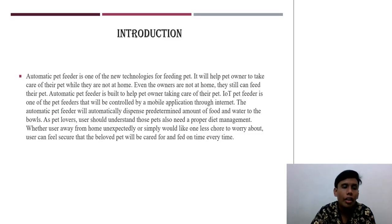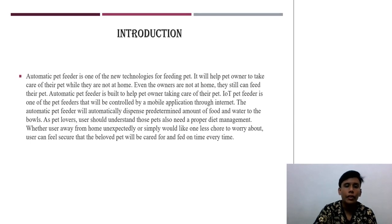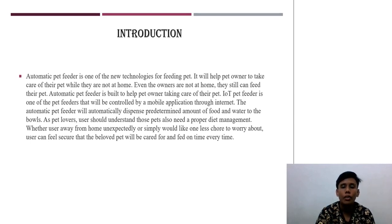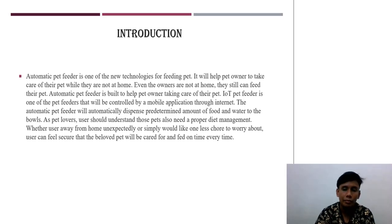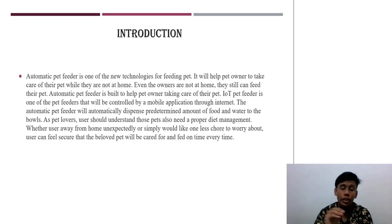Introduction. Automatic pet feeder is one of the new technologies for feeding pets. It will help pet owners to take care of their pet while they are not at home. Even though they are not at home, they still can feed their pet. The pet feeder is controlled by a mobile application through the internet. The automatic pet feeder will automatically dispense the food and the amount of food on time when the owner clicks on the application, so the owner does not have to worry about diet management or food consumption for their pets.